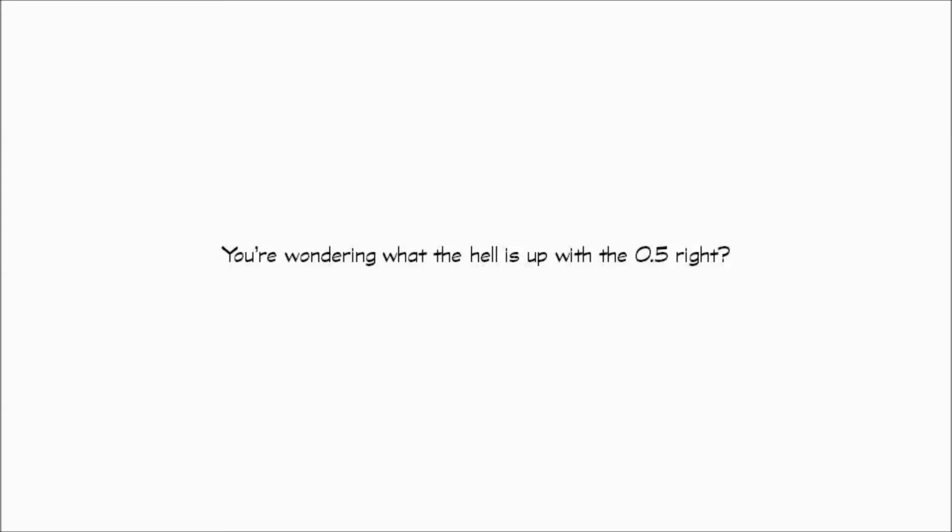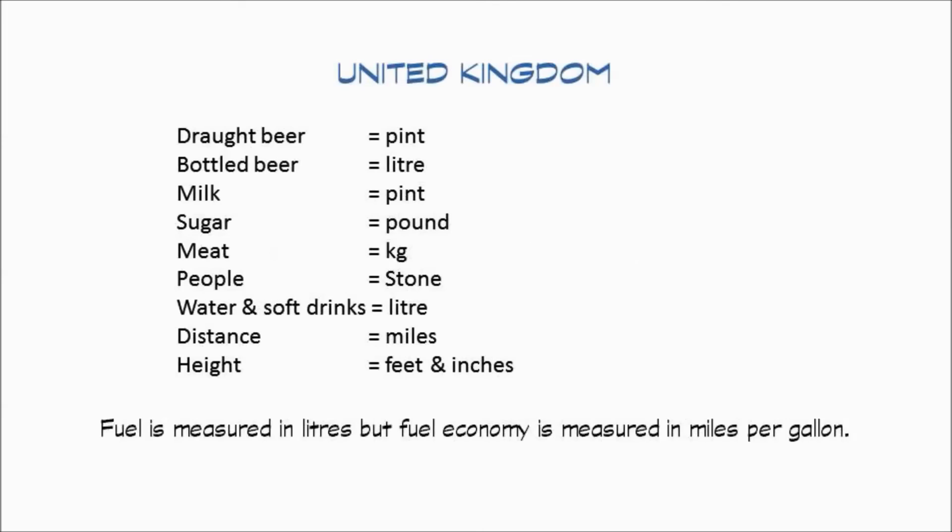So, you're wondering what the hell is up with the 0.5 right? Well, 0.5 is the United Kingdom. They use both systems. Draft beer they measure in pints, bottled beer in liters, milk in pints, sugar in pounds, meat in kilograms, people in stone, water and soft drinks in liters, distance in miles, height in feet and inches. Fuel is measured in liters, while fuel economy is measured in miles per gallon. Yeah, go figure. As if it's not troublesome enough to convert between the metric and the Imperial.